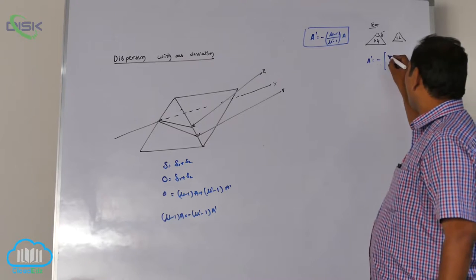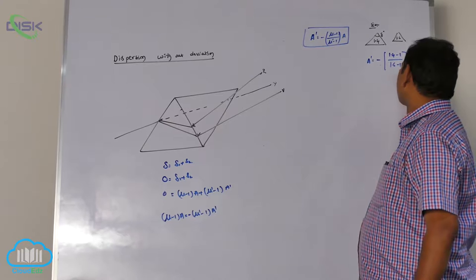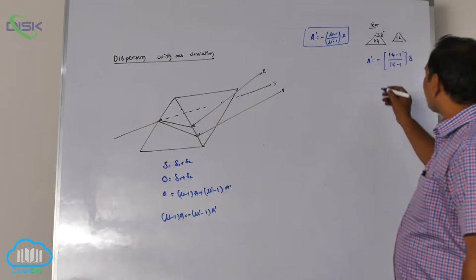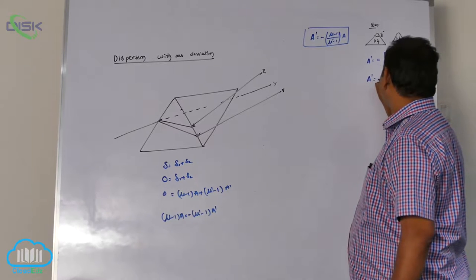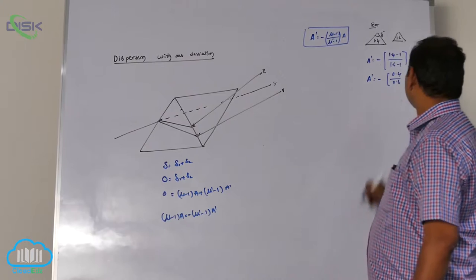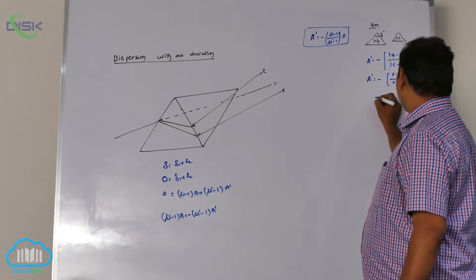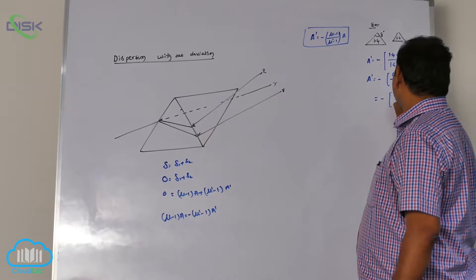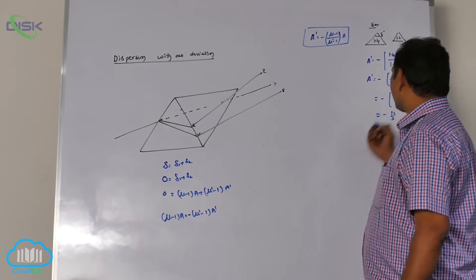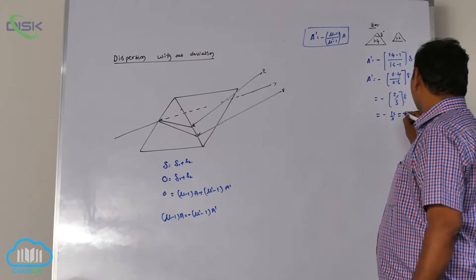Substituting values: A dash equals (mu minus 1) divided by (mu dash minus 1) times A. Mu is 1.4, so (1.4 minus 1) divided by (1.6 minus 1) times 8. That gives 0.4 divided by 0.6 into 8, which equals 2 by 3 into 8, giving 16 by 3, which is 5.33 degrees.